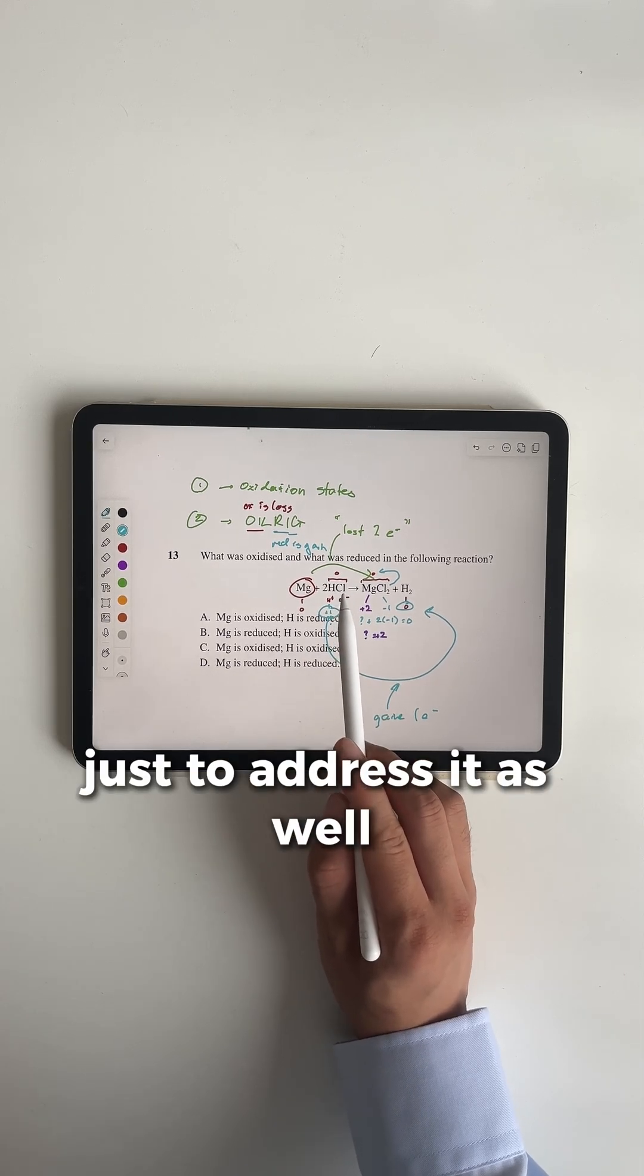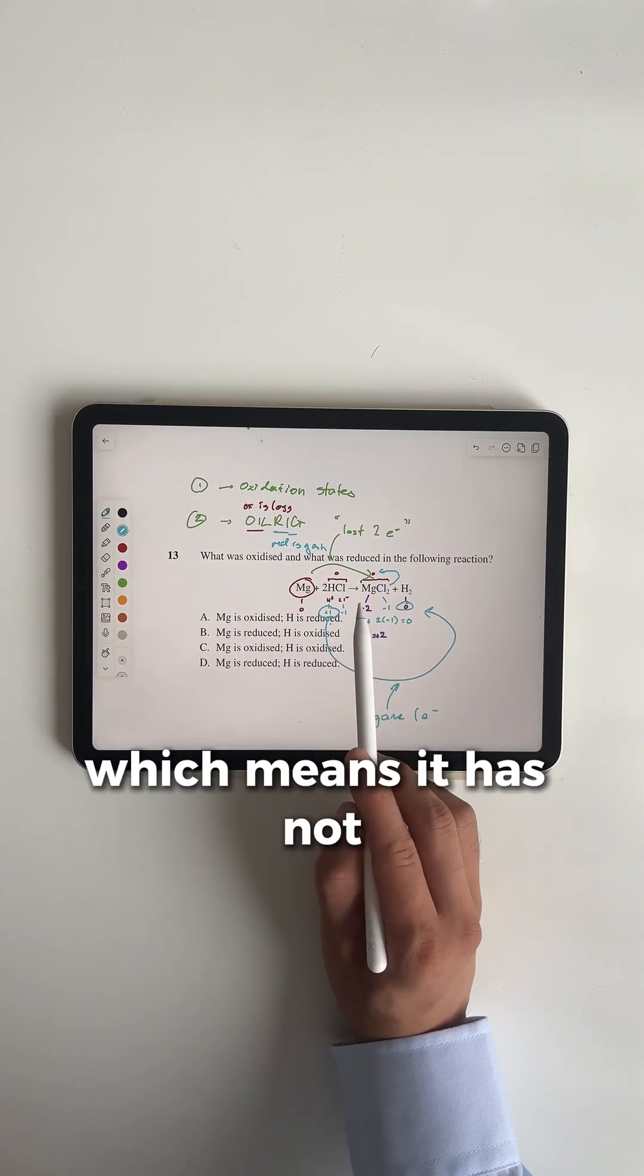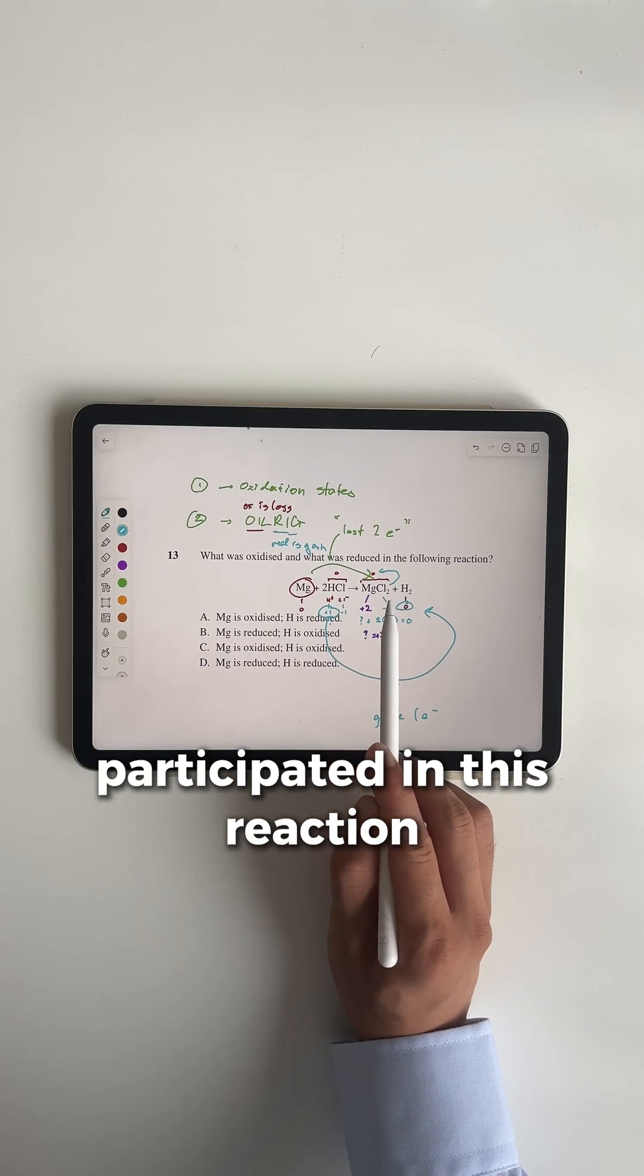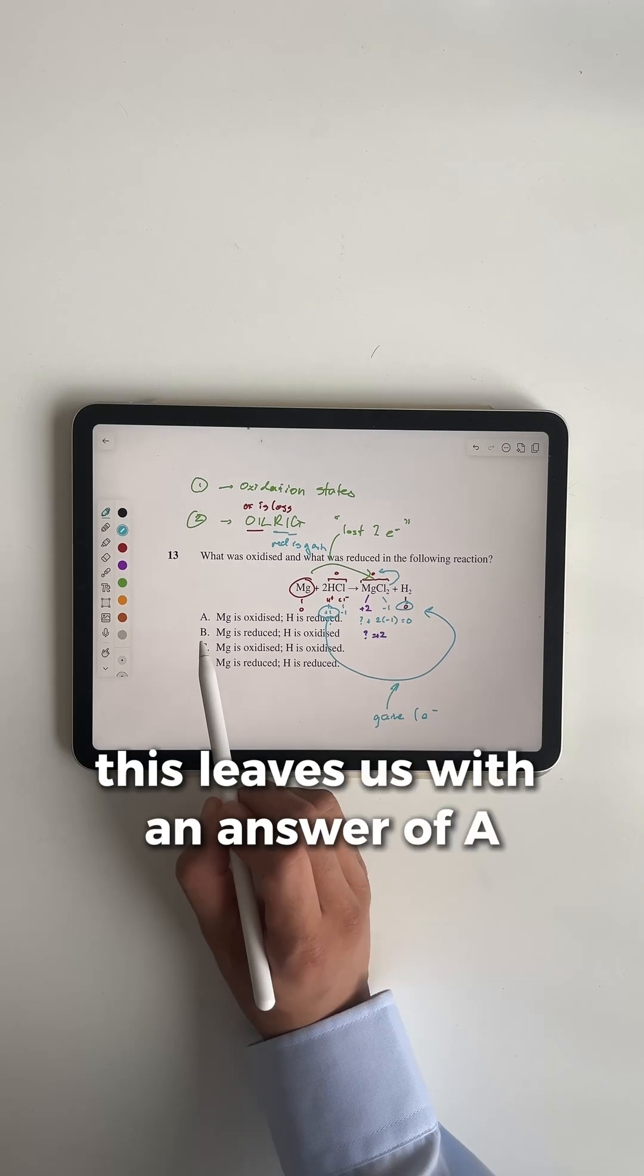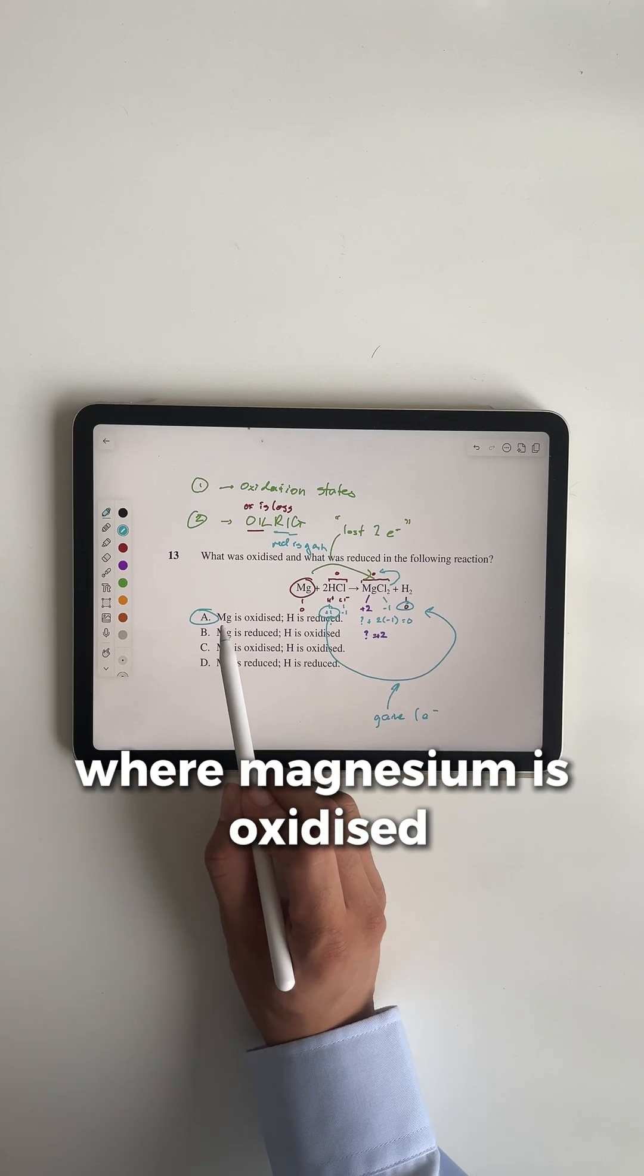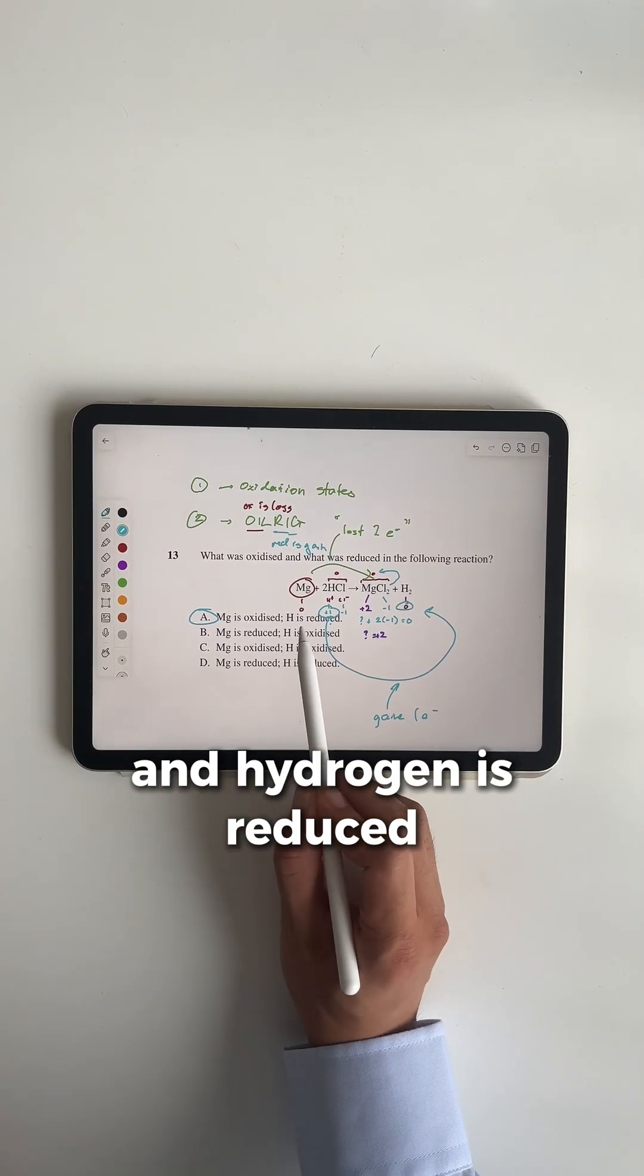Finally, chlorine, just to address it as well, has not changed its oxidation state, which means it has not participated in this reaction. Instead, it is a mere spectator. This leaves us with an answer of A, where magnesium is oxidized and hydrogen is reduced.